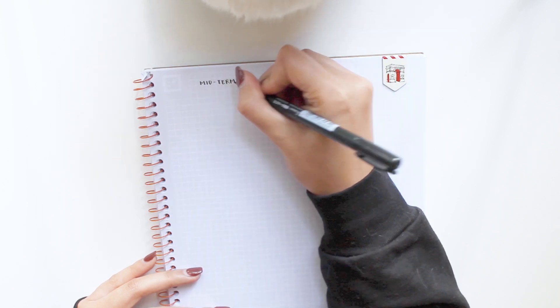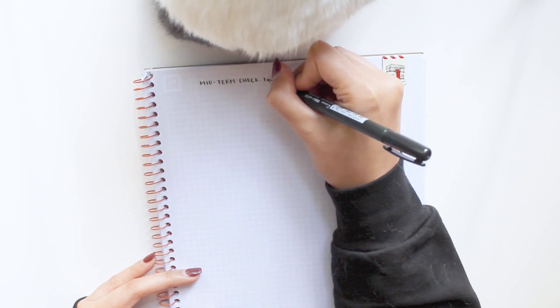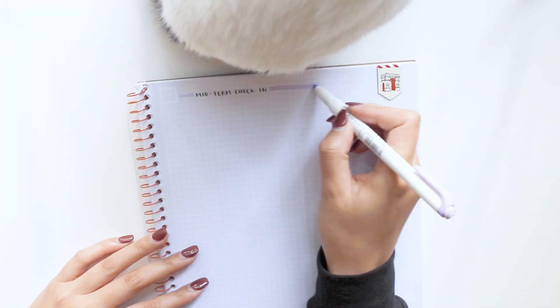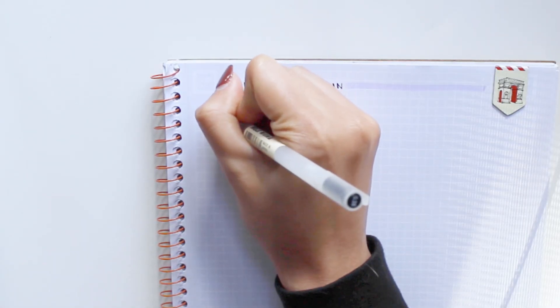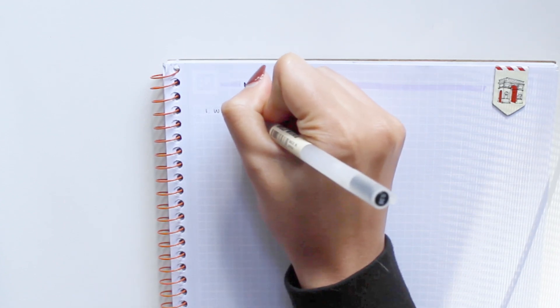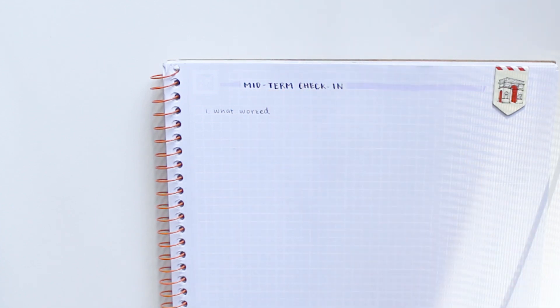It's really good to have a pen and paper for this because it allows you to really get specific about things instead of twiddling your thumbs imagining how you're going to do better. Writing it down makes your goals more concrete. The first two questions I ask are: what's working and what's not working?